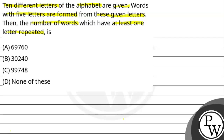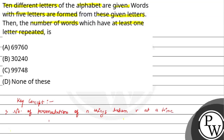Here we will use permutation. The number of permutations of n things taken r at a time. This is our formula: nPr is equal to n factorial upon n minus r factorial.